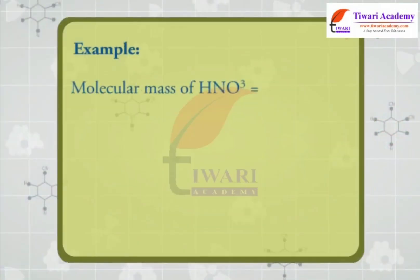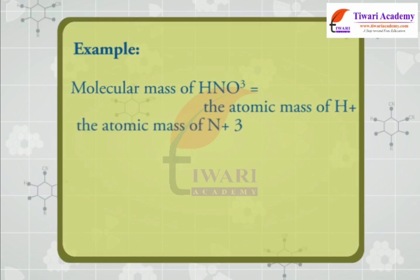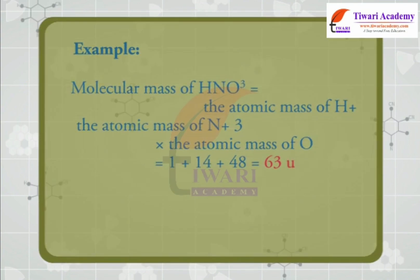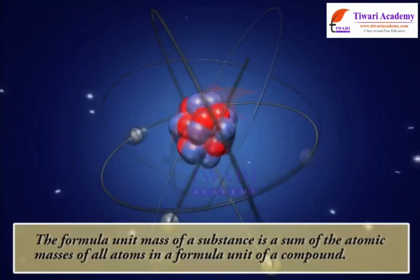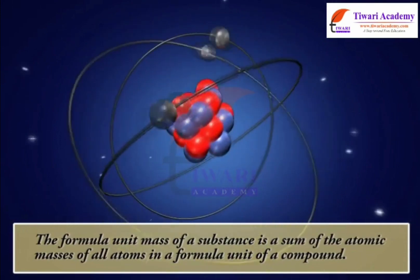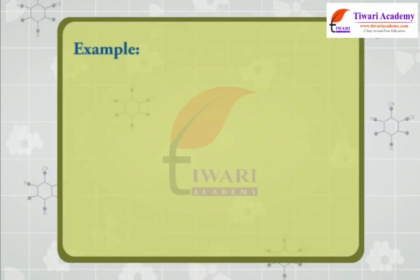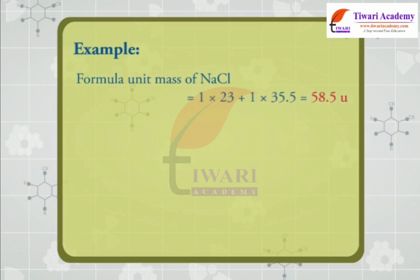Example: the molecular mass of HNO₃ is equal to the atomic mass of H plus the atomic mass of N plus 3 times the atomic mass of O, which equals 1 + 14 + 48 = 63u. The formula unit mass of a substance is the sum of the atomic masses of all the atoms in a formula unit of a compound. Example: formula unit mass of NaCl = (1 × 23) + (1 × 35.5) = 58.5u.